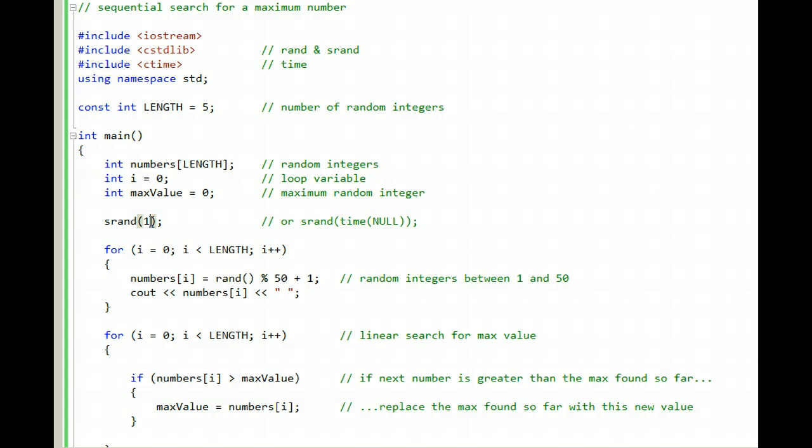I'm going to change the 1 in the srand function parameter. I'm going to change it to time null so that we have interesting random numbers each time that we run the program.